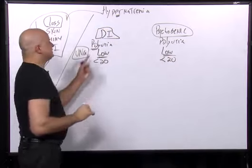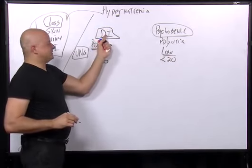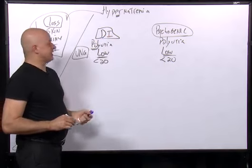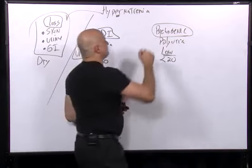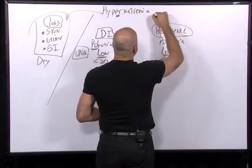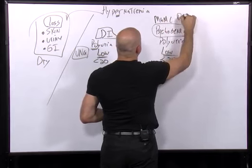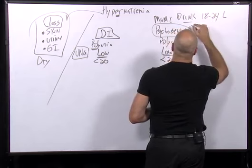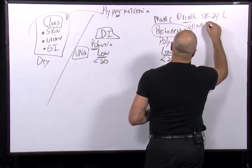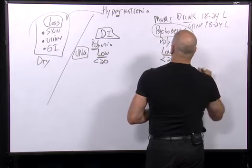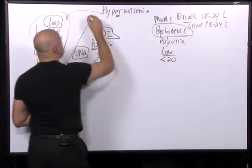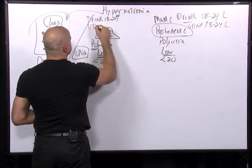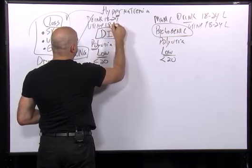Diabetes insipidus: I either have an insufficient amount of ADH, or I don't have an effect of ADH at my collecting ducts. Psychogenic polydipsia: a person has a mania problem and they're drinking all the time — 18 to 24 liters a day — and urinating 18 to 24 liters a day. Diabetes insipidus patients are also drinking and urinating 18 to 24 liters a day.